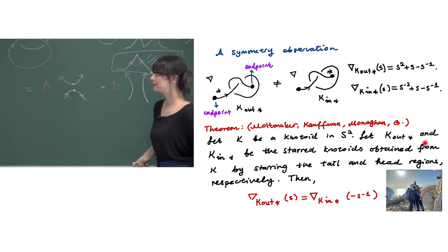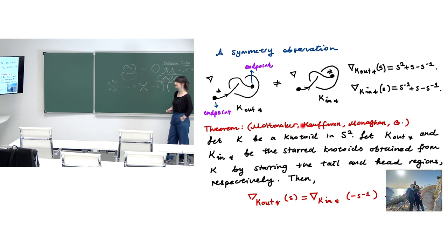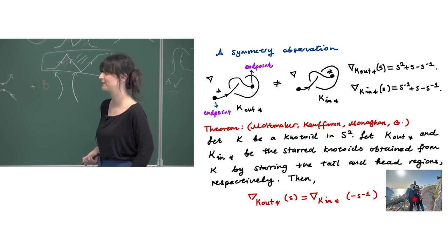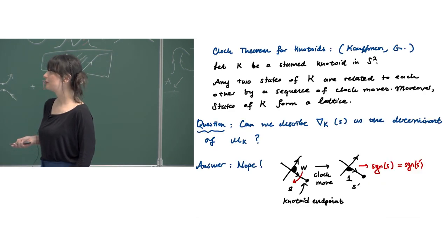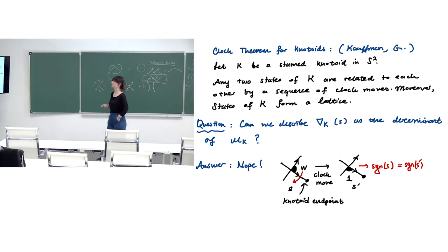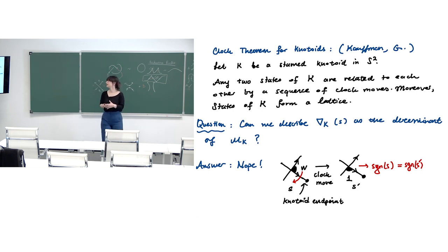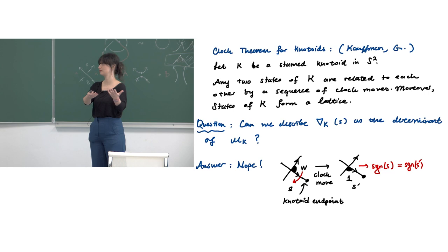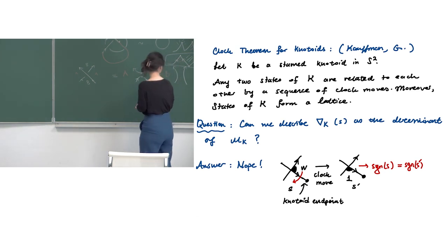This result was proven by Walt Mod Baker with our discussions with Kaufman, Monaghan and myself. We can generalize the observation: if you star the exterior region and if you star the interior region of a knotoid diagram, the polynomials will always differ in this way. The question then arises: can we describe the state sum polynomial as the determinant of some matrix? For the classical case the clock theorem lets us go between the determinant and the state sum, so can we give a determinant description for knotoids?